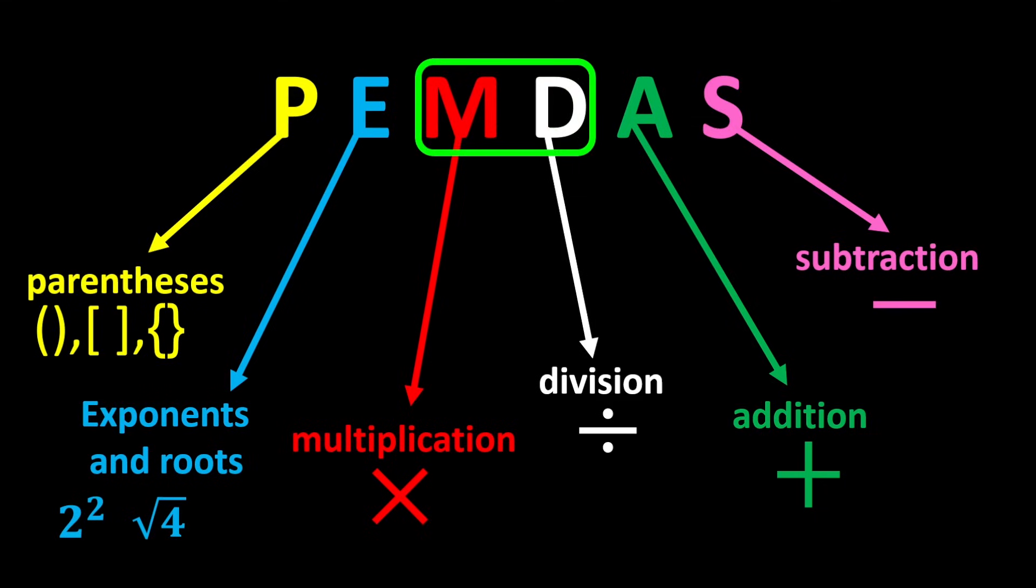Remember that multiplication and division have equal priority. In any expression that has both multiplication and division, we move from left to right and perform whichever we reach first. This rule also applies to addition and subtraction.